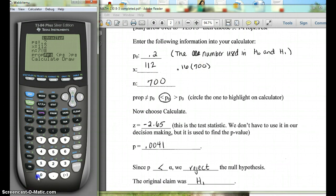Our n is how many people we surveyed, so 700. Now, our claim was that the proportion was less than 0.2. So we want the less than prop. And we're going to go to calculate.